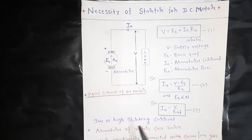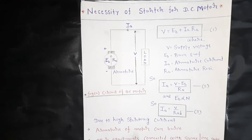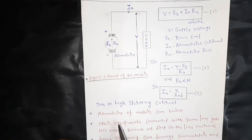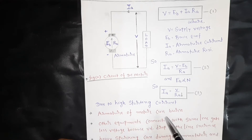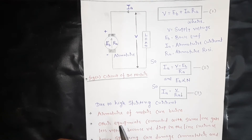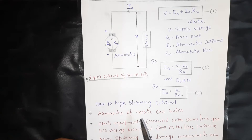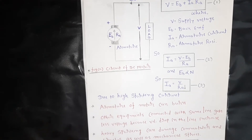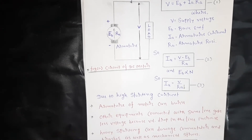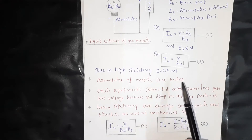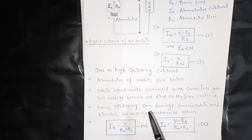Due to the higher starting current, there are many problems created in the DC motor. Due to the higher starting current, the armature of the motor can burn. The voltage drop in the line also increases, and if some equipment is connected to the same line, other equipment will get lesser voltage. Heavy sparking can damage the commutator as well as the brushes, and it will also create mechanical stress to the DC motor.